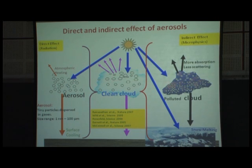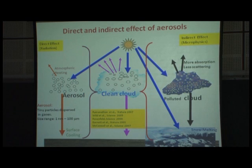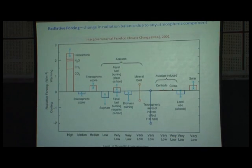There is a third effect involving absorbing aerosols — black carbon. Because they are inside cloud droplets or ice particles, as these fall down they deposit black carbon on snow, thereby changing the reflectance properties of the snow. This relates to the news about glaciers changing.